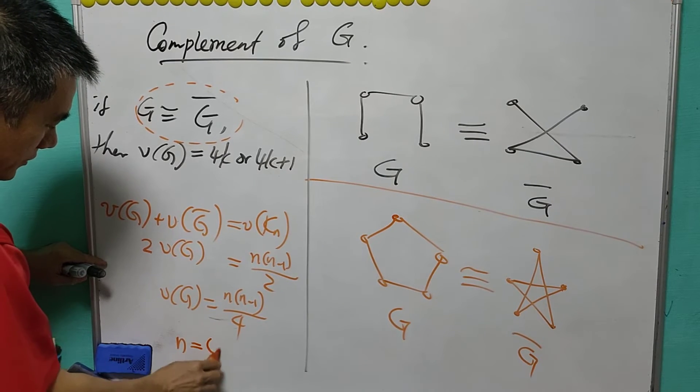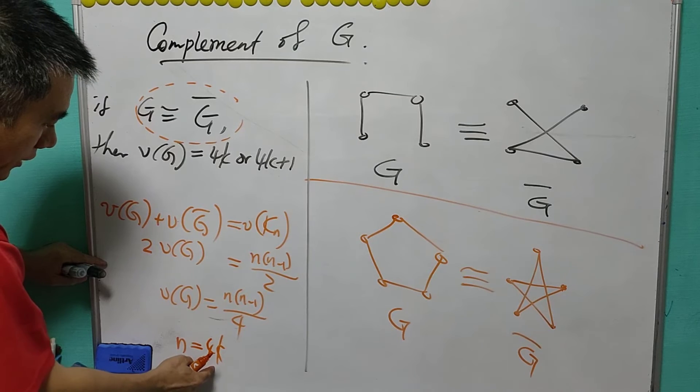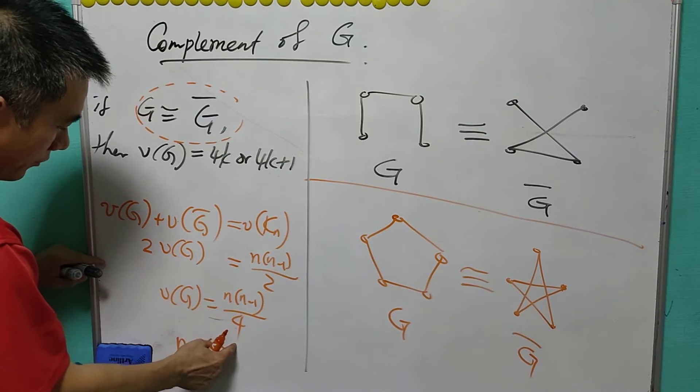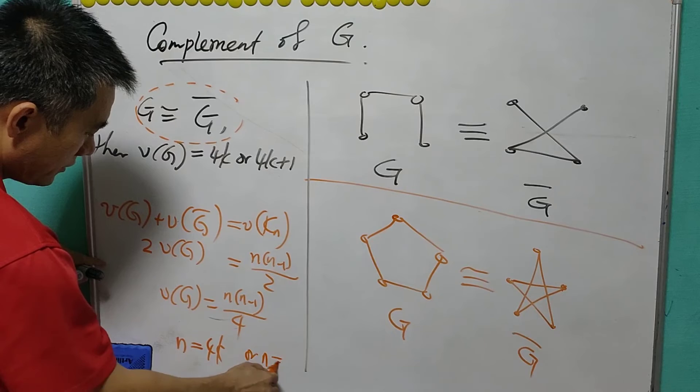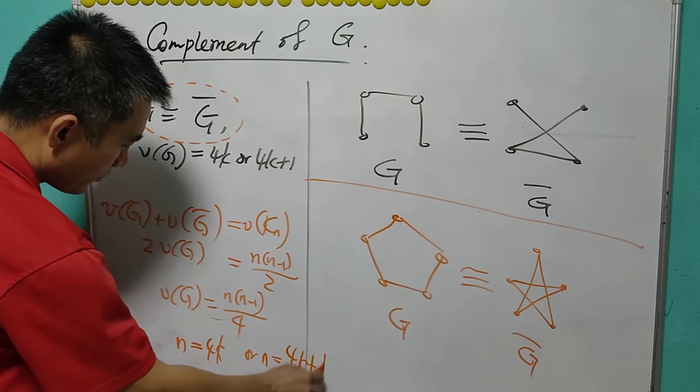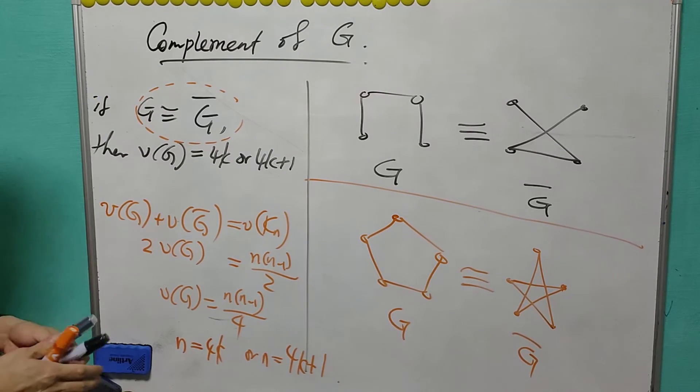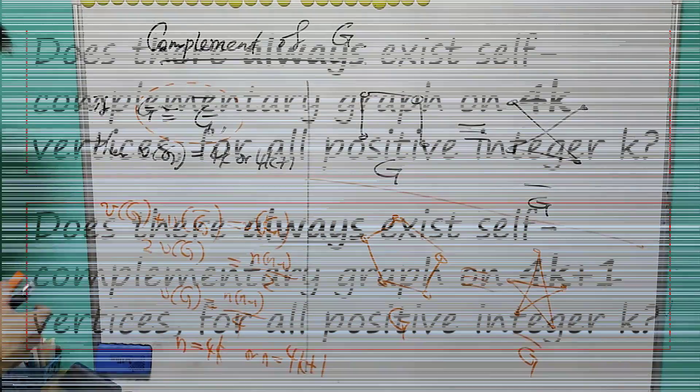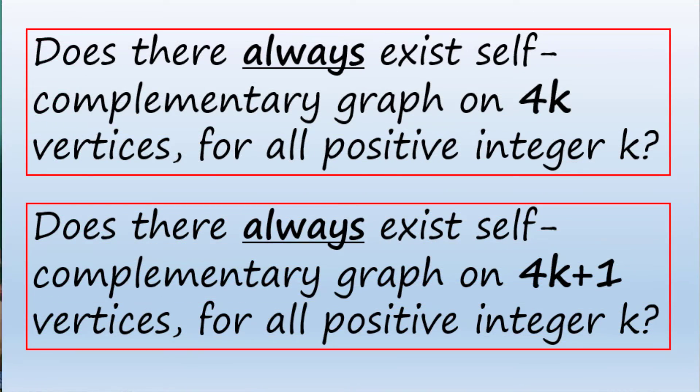That is, it is written as 4k. Otherwise, N minus 1 must be divisible by 4, and it is written as 4k plus 1 for some positive integer k.